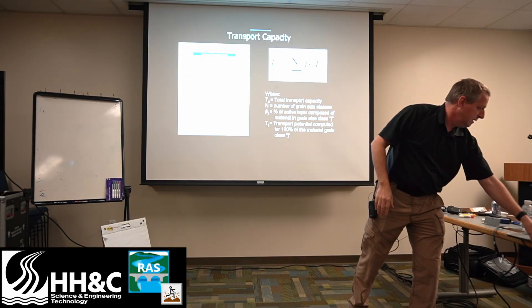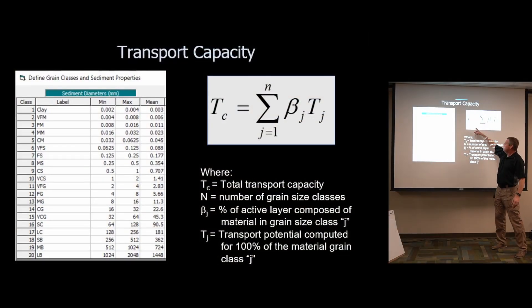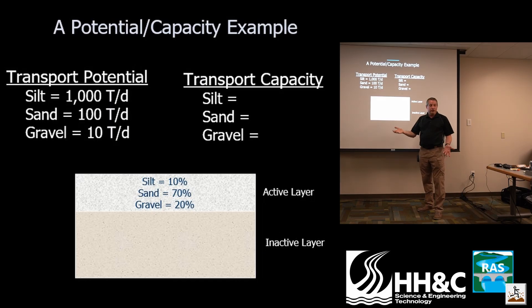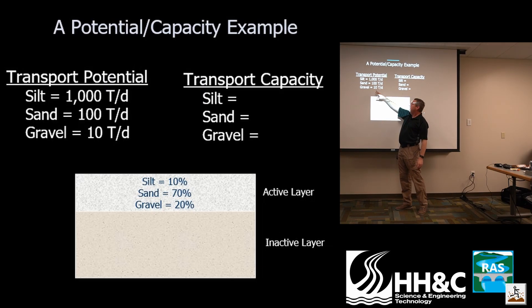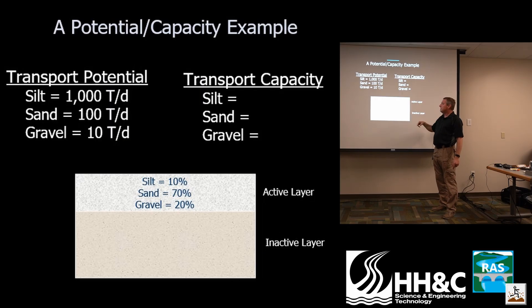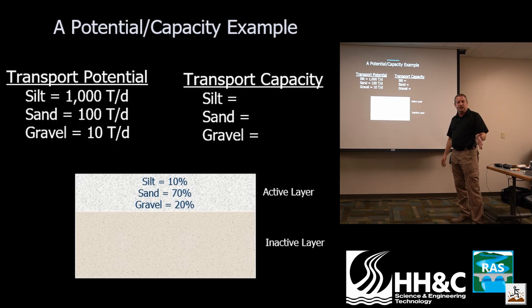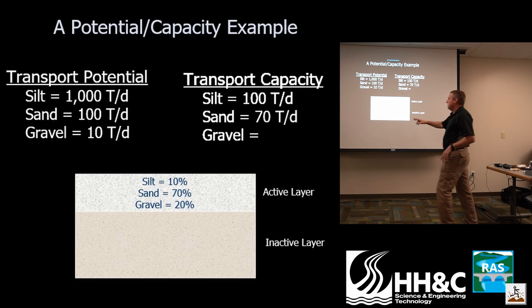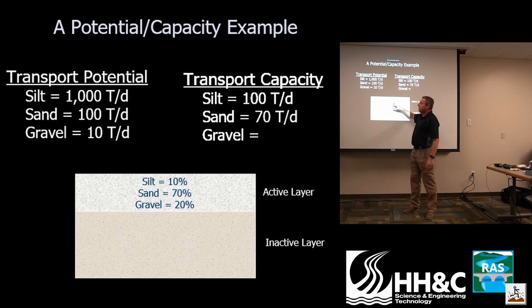Here's what it looks like mathematically: capacity is the sum of potentials times the fraction. In a simplified three grain class exercise: applying your transport function gives 1,000 tons/day for silt, 100 tons/day for sand, and 10 tons/day for gravel. Your active layer is 10% silt, 70% sand, 20% gravel. Transport capacity of silt = 100 tons/day; sand = 70 tons/day (100 × 0.70); gravel = 2 tons/day. This is how much of each grain class the system can transport.